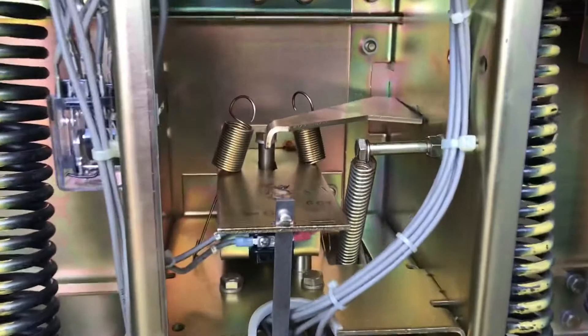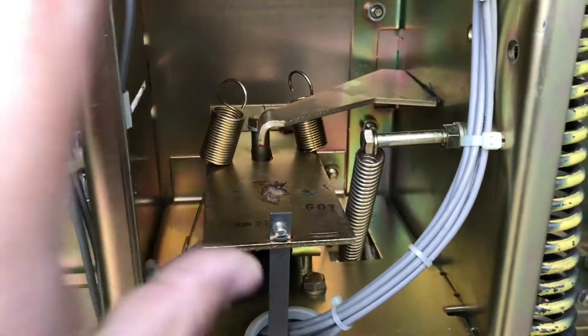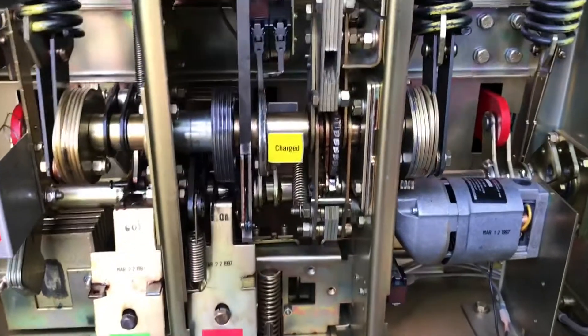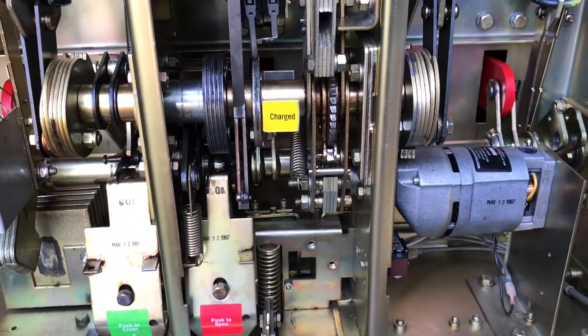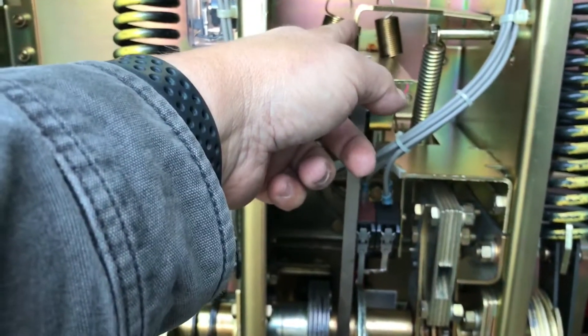So if the springs on this were currently energized, what you would see happen is it would cause the breaker to trip by pulling up and pushing up on this device right here.